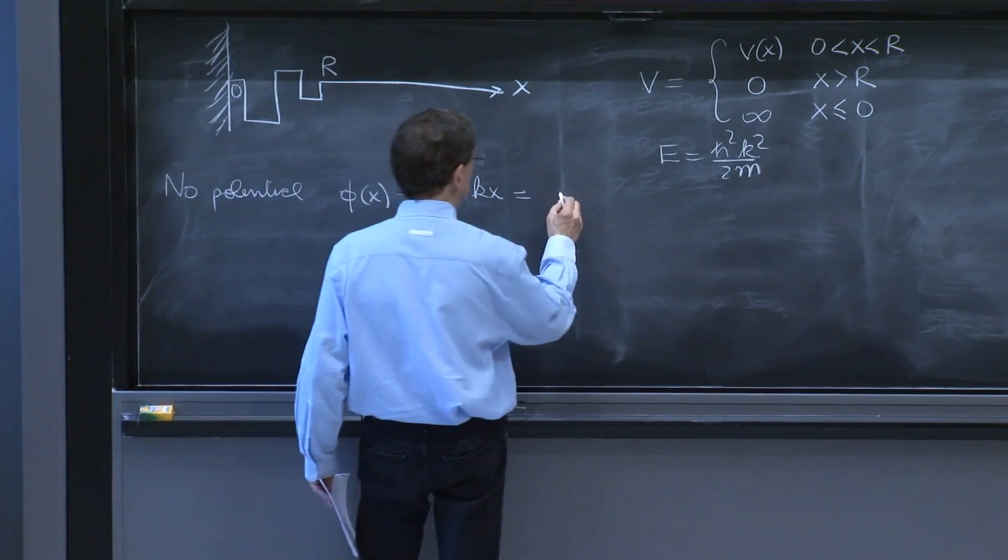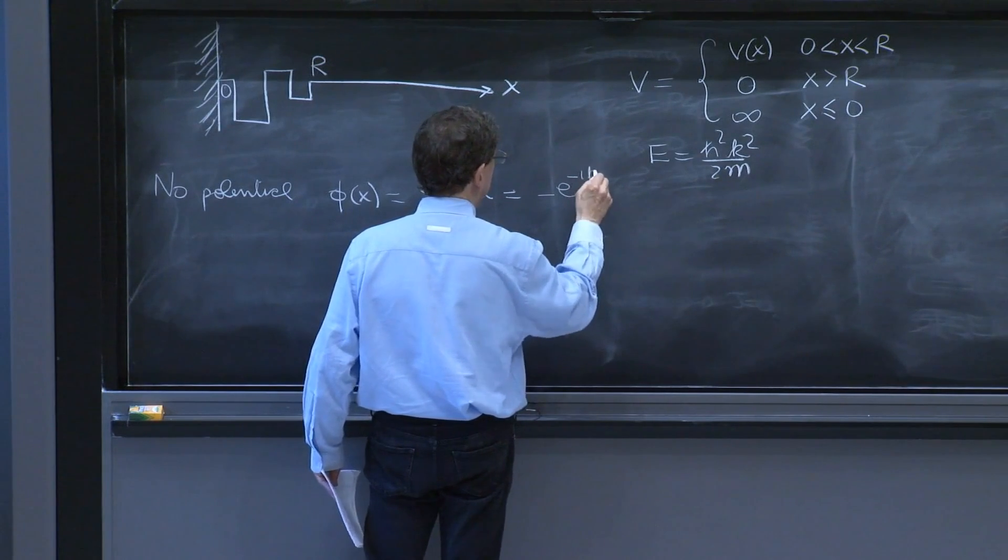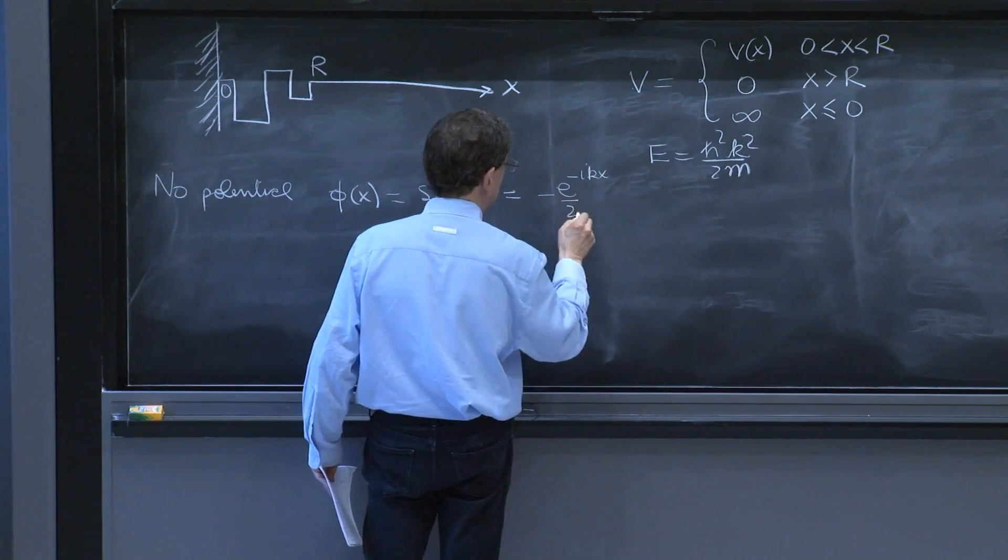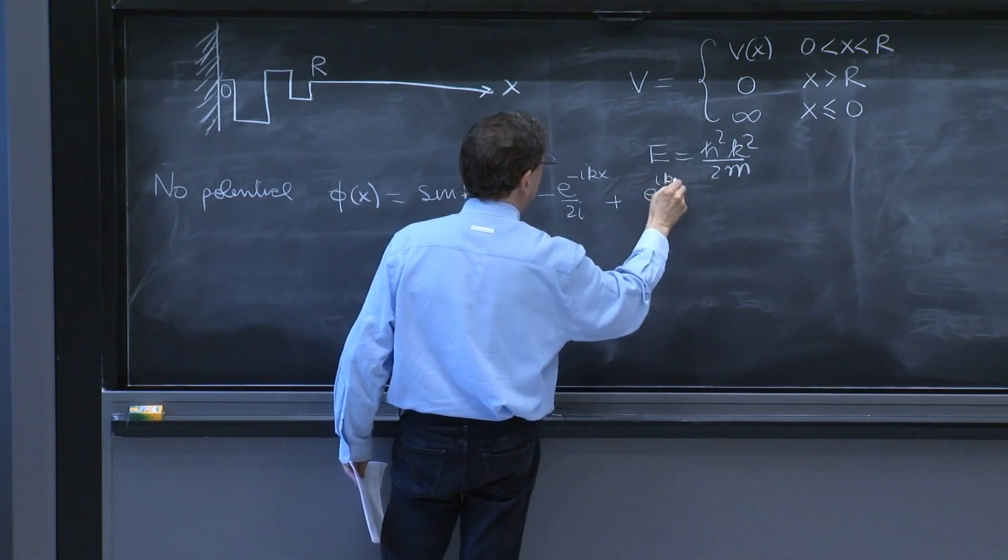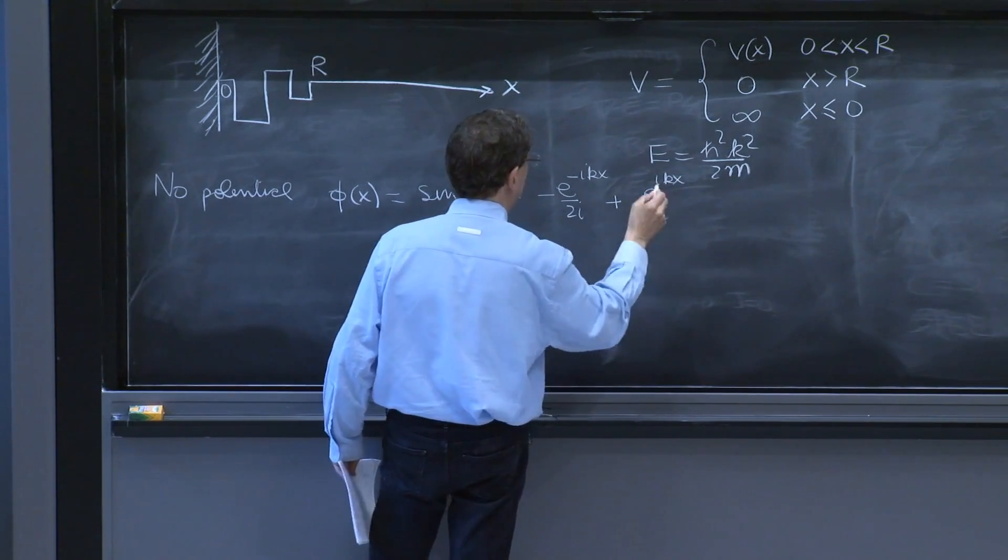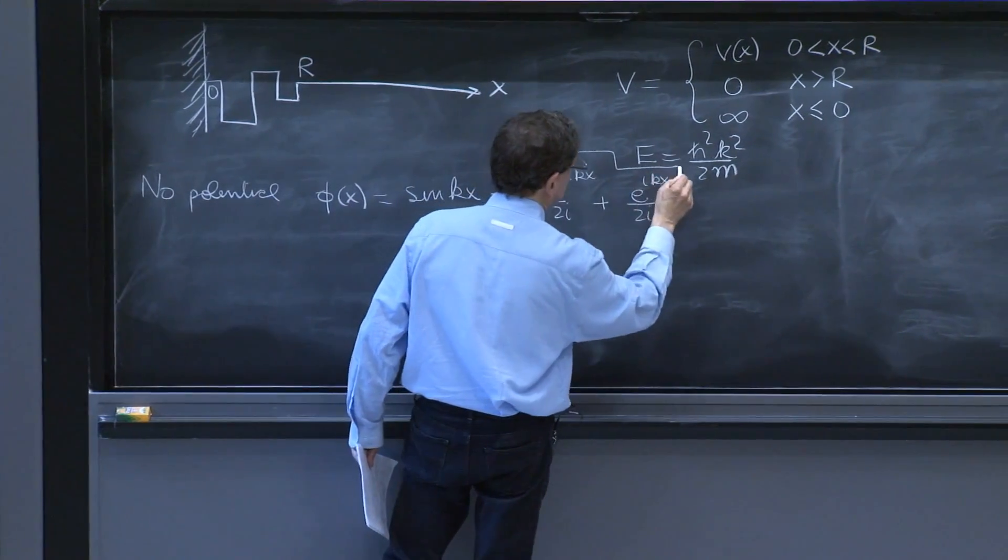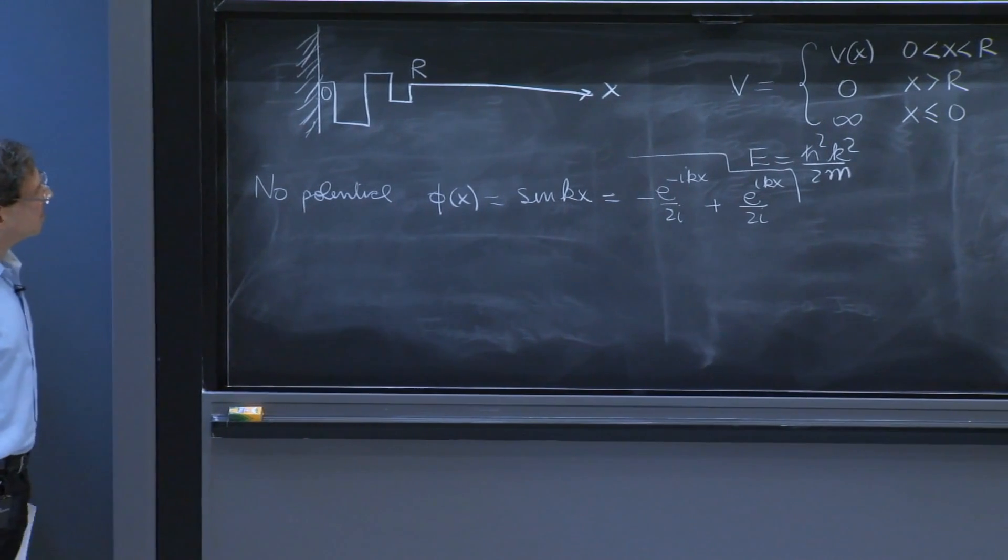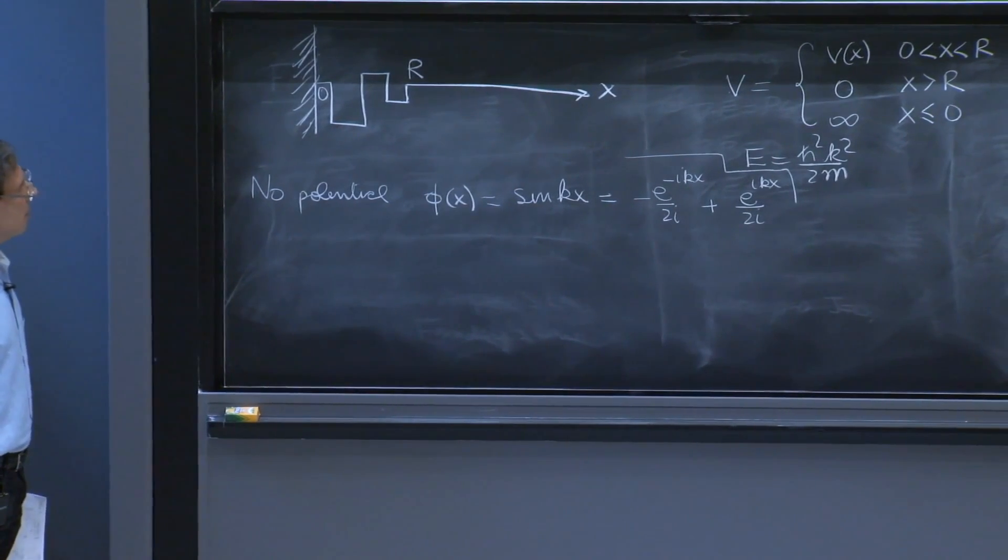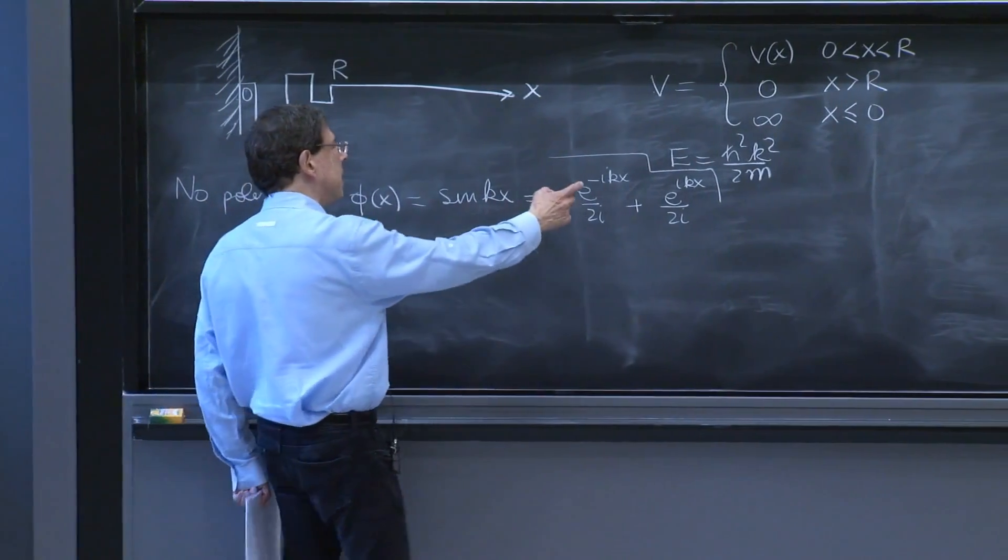And a reflected wave is a wave that bounces back and propagates towards more positive x. So here we'll write this as minus e to the minus ikx over 2i, plus e to the ikx over 2i.